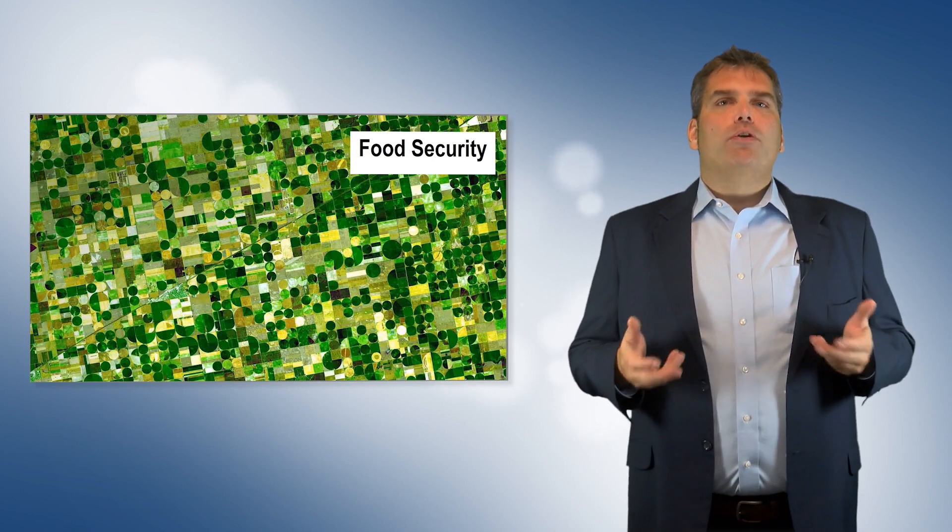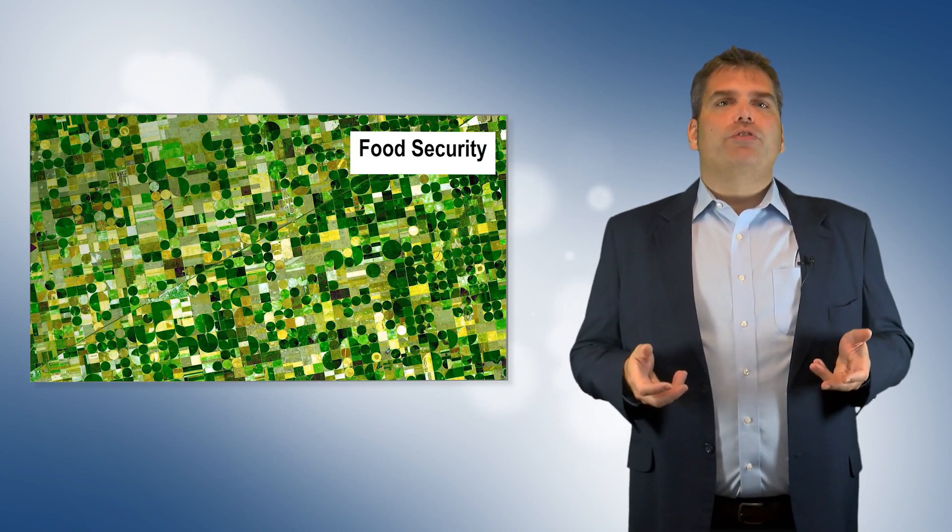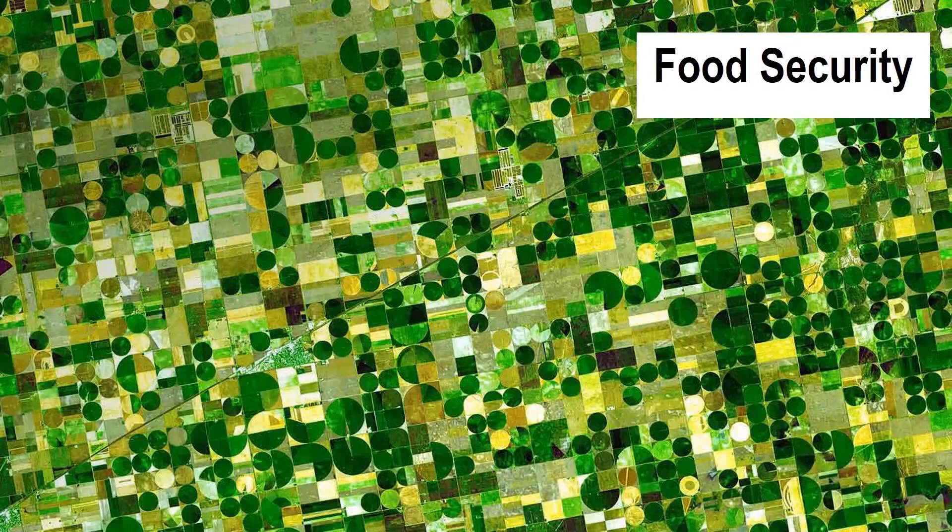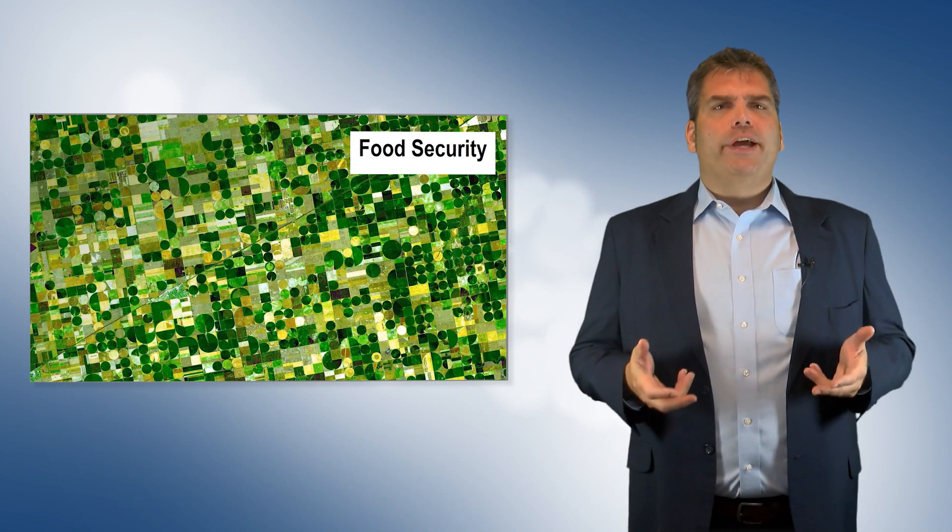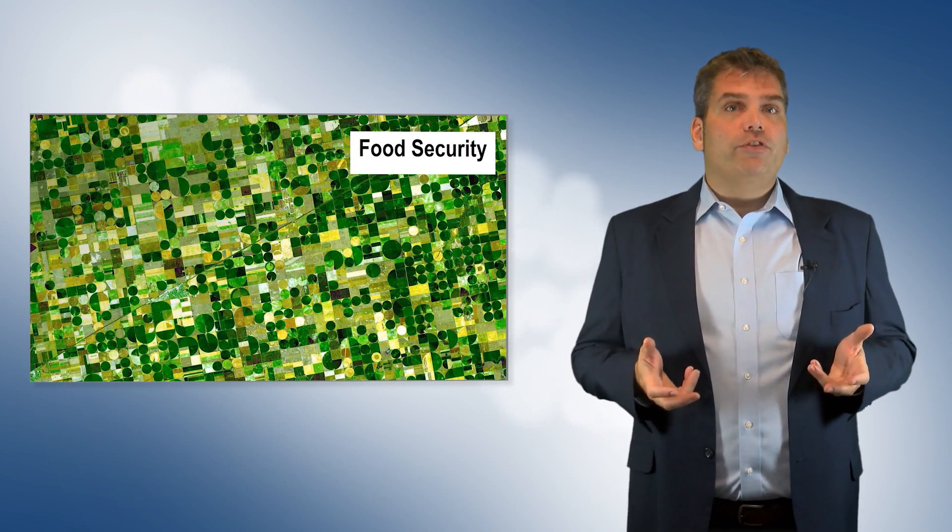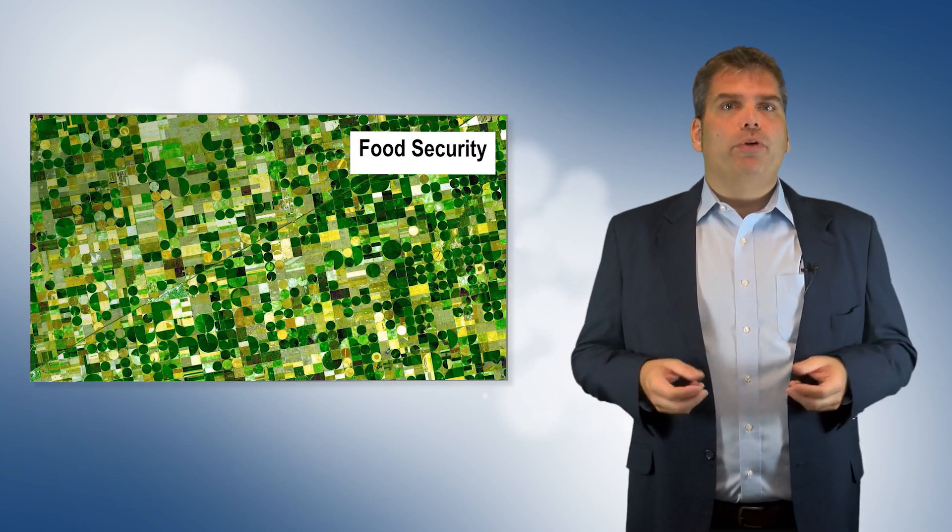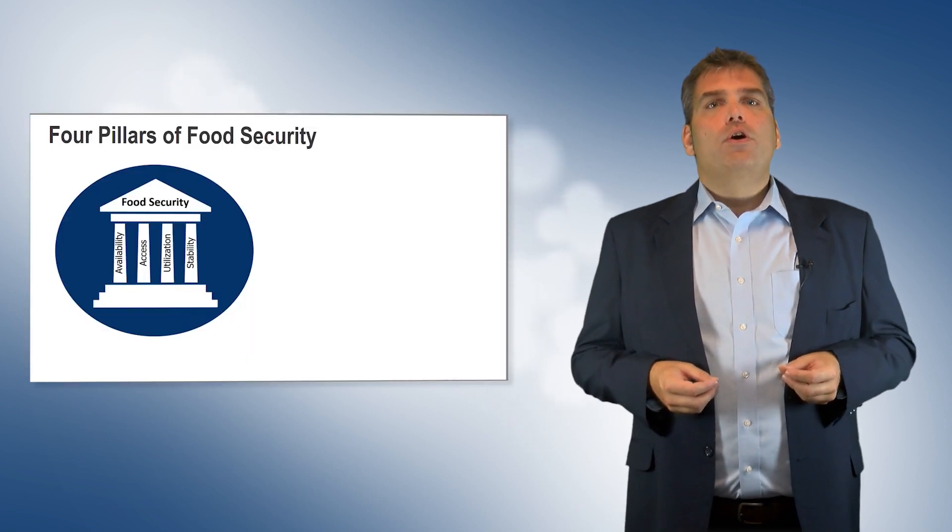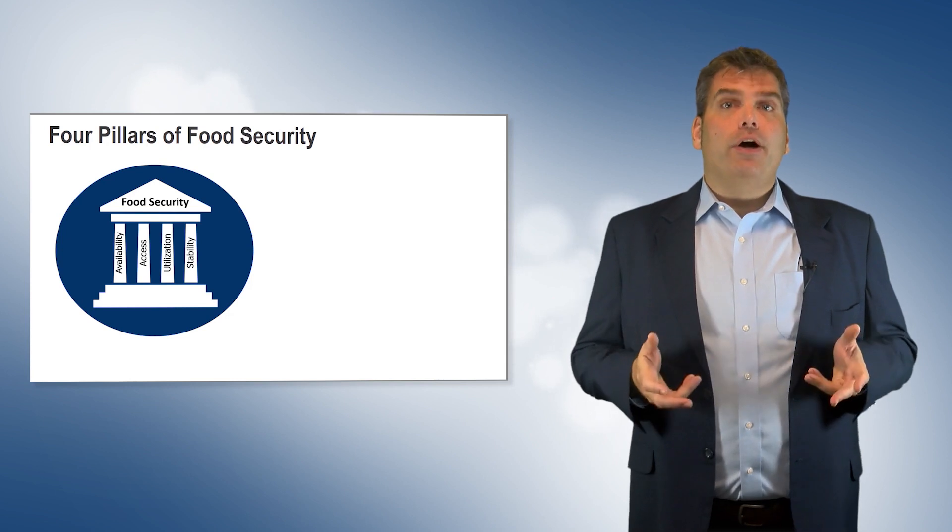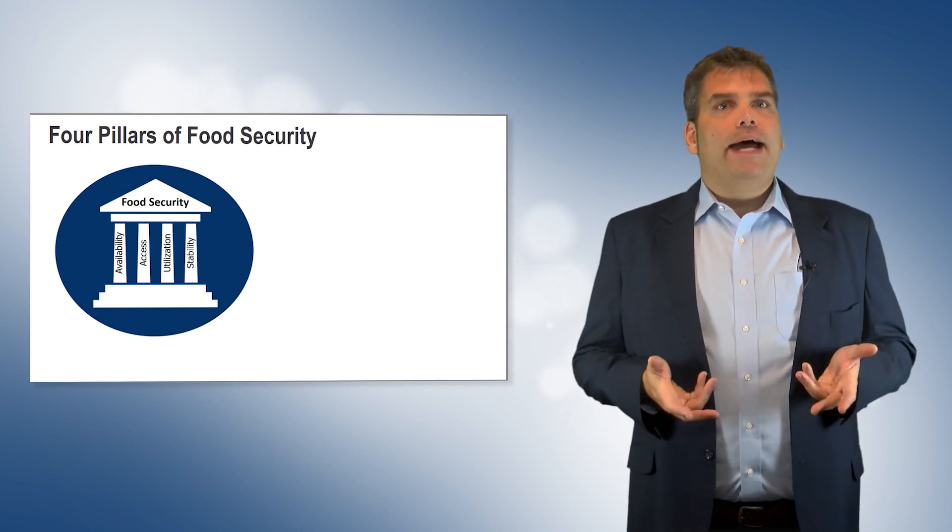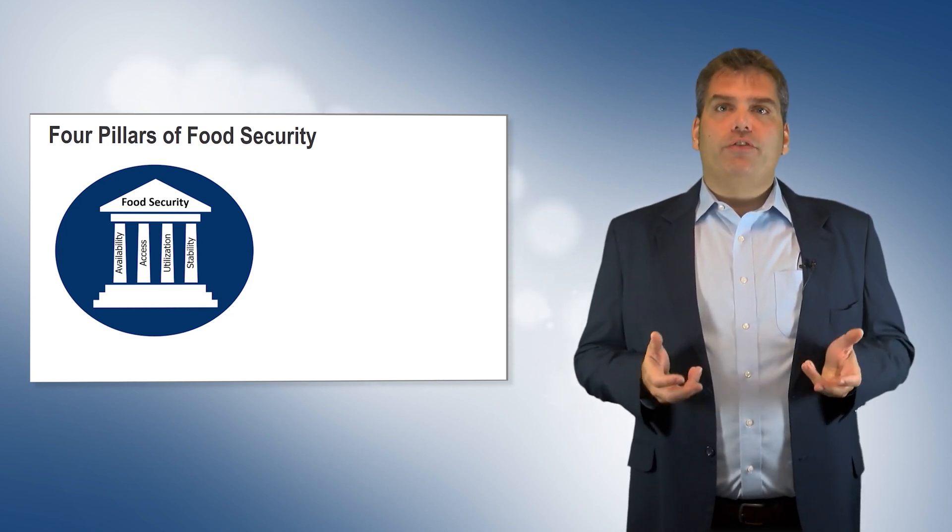Let's take a brief look at how Earth observation is used for food security analysis. Food security analysis determines whether individuals, households, communities, or other populations are hungry and food insecure. It also assesses the underlying causes, which are important for decision makers to design appropriate interventions. Food security can be evaluated by four metrics: availability, access, utilization, and stability.